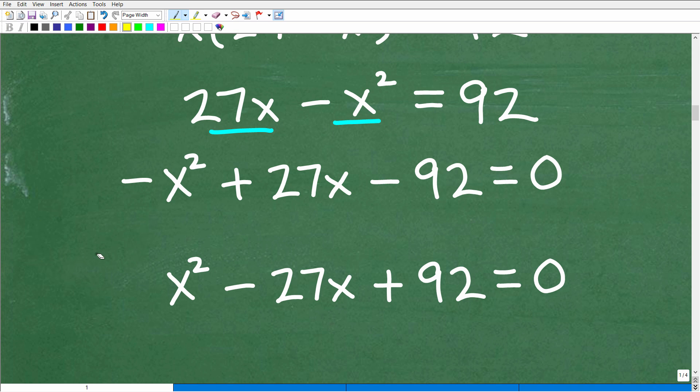Typically, when you have it, like a negative X squared, plus say like 27X minus 92. I personally like to just get rid of this negative right here. Okay. In front of X squared. It's just my preference. It won't change the problem, but it'll make your life a lot easier.